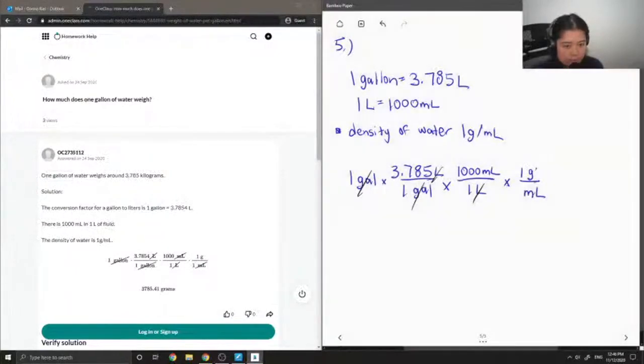Now you'll notice my milliliters canceling out as well. So then if you multiply it out, you get 3,785 grams of water in one gallon.